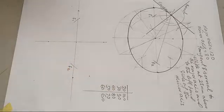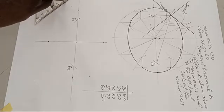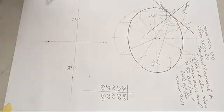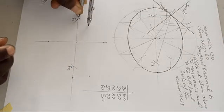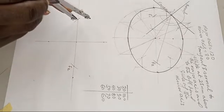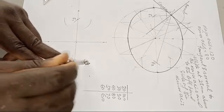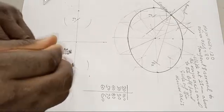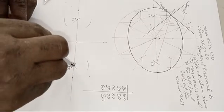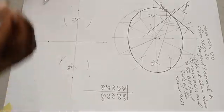Starting with the first pair — 20 and 100. Measure 20 on your compass, stay on F1, and mark arcs above and below. Then mark arcs below as well. Go to F2 and do the same. Now intersect with 100: measure 100 on your compass.